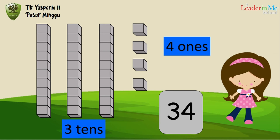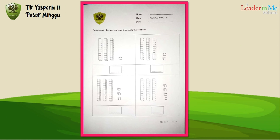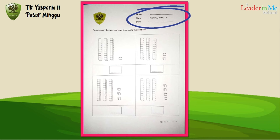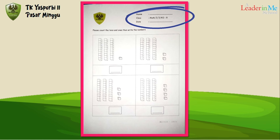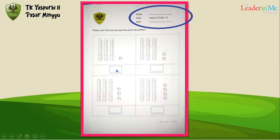Okay, let's go to your worksheet, friends. This is your worksheet — don't forget to write your name and date. The instruction is: please count the tens and ones, then write the numbers. You should count how many tens and ones, then write the numbers in the box.